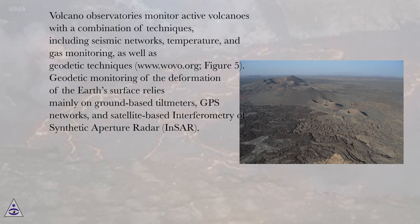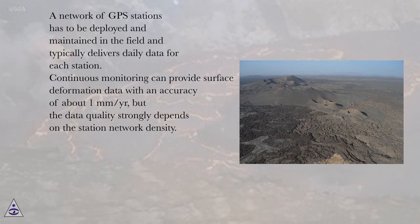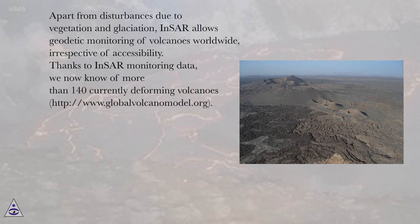Geodetic monitoring of the deformation of the Earth's surface relies mainly on ground-based tiltmeters, GPS networks, and satellite-based interferometry of synthetic aperture radar (InSAR). A network of GPS stations has to be deployed and maintained in the field and typically delivers daily data for each station. Continuous monitoring can provide surface deformation data with an accuracy of about 1 mm per year, but the data quality strongly depends on the station network density. InSAR records surface deformation in the line of sight of the satellite at 10 to 40 day intervals and can reach accuracies of less than 1 cm for a stack of interferograms. Apart from disturbances due to vegetation and glaciation, InSAR allows geodetic monitoring of volcanoes worldwide, irrespective of accessibility.